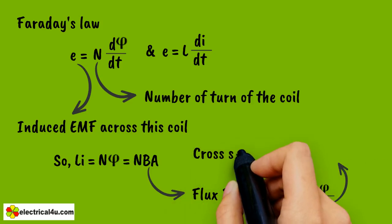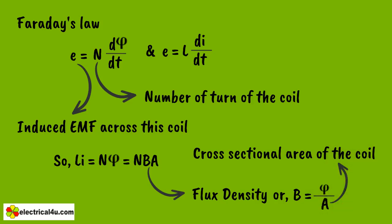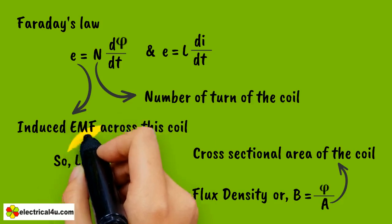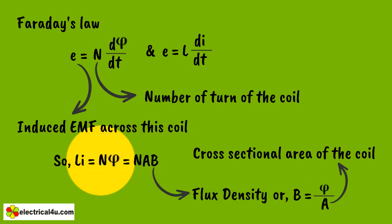Where A is the area of the coil. This N phi or Li is called magnetic flux linkage and is denoted by psi.